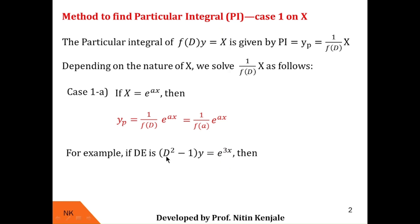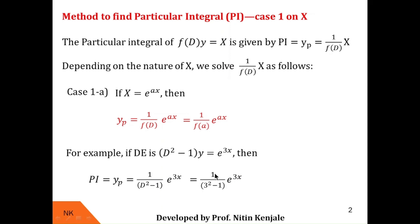If the differential equation is (D² - 1)y = e^(3x), then the corresponding particular integral yp, that is 1/(D² - 1) of e^(3x), can be calculated by simply replacing D by 3. So when we put D = 3, we get yp as 1/(3² - 1) into e^(3x). Since 3² = 9 and 9 - 1 = 8, yp is 1/8 e^(3x).